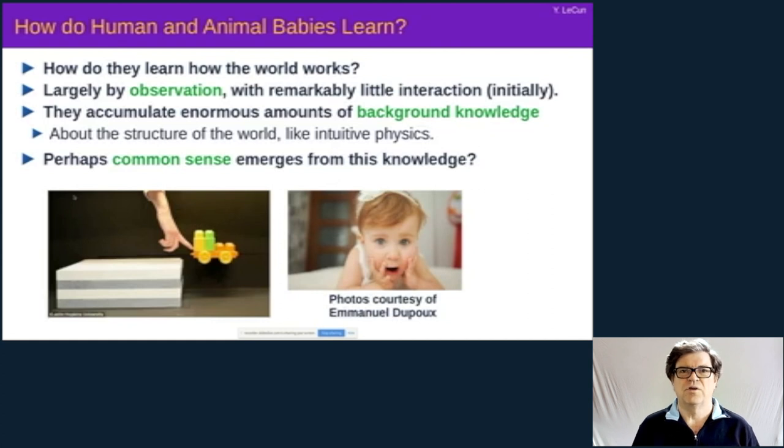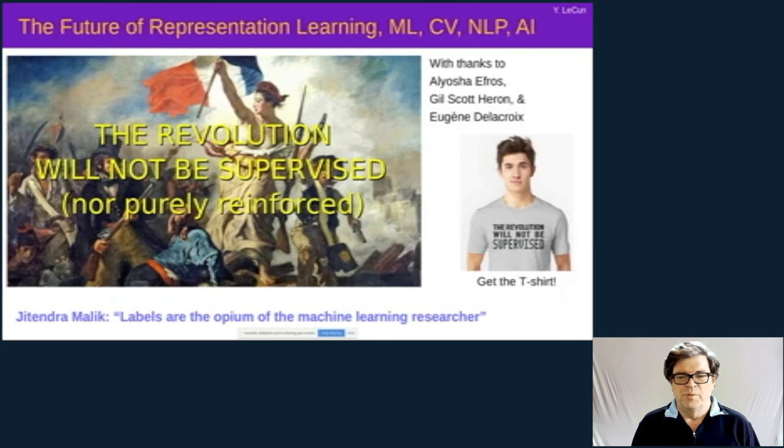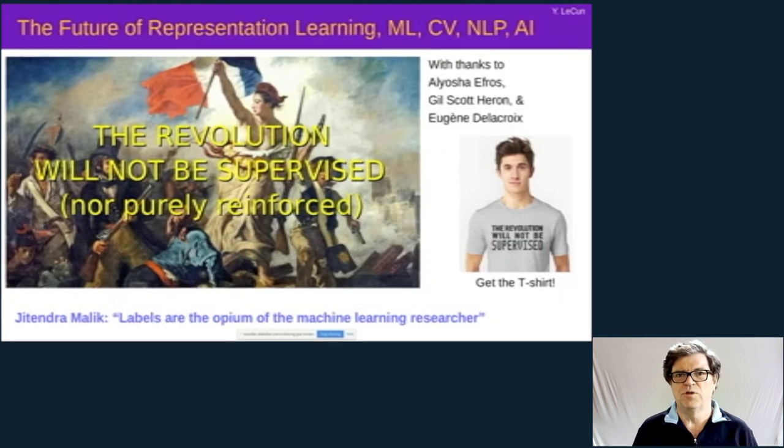This is probably the vehicle through which baby animals and humans learn massive amounts of background information about the world, such as intuitive physics and things of that type. Perhaps the accumulation of this knowledge forms the basis of common sense. So being able to reproduce this type of learning in machines would be enormously powerful, would reduce the requirement for label samples and trials, and in my opinion the next revolution in AI will not be supervised nor reinforced.